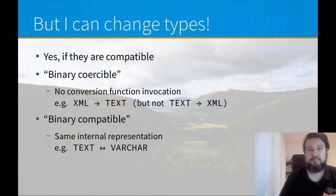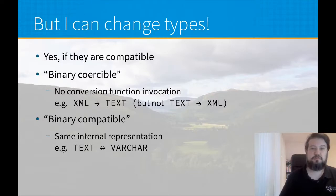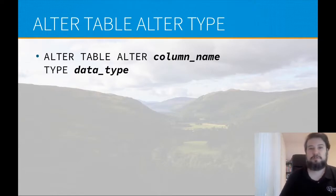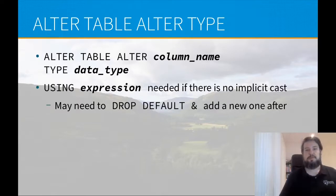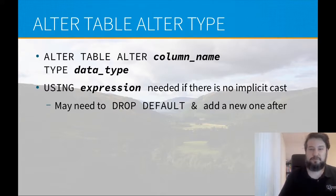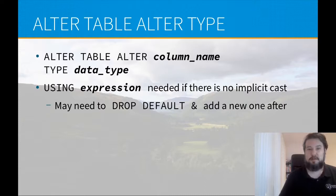You can also have binary compatible columns and data types that have exactly the same internal representation in Postgres, such as text and varchar. The way you do it is with the ALTER TABLE ALTER TYPE statement — a DDL command that lets you alter a table, alter the column name to the data type you want. You may also need to use the USING expression if there is no implicit cast between the first and second type, which means you may have to drop the default value for that column, run the ALTER TABLE statement, and then add another default for the new data type.